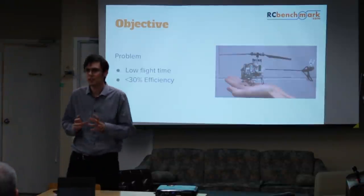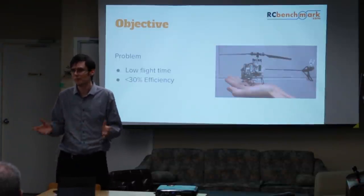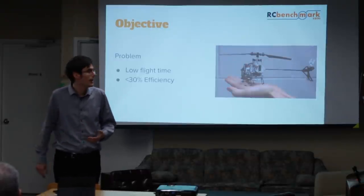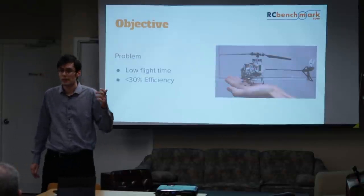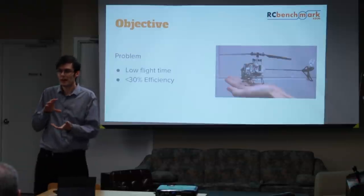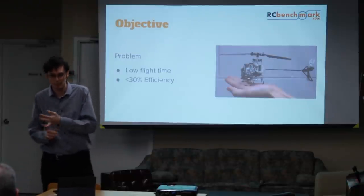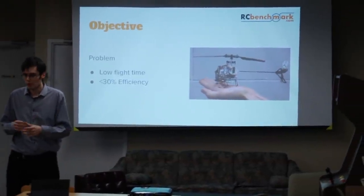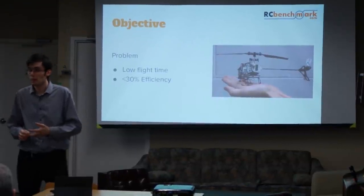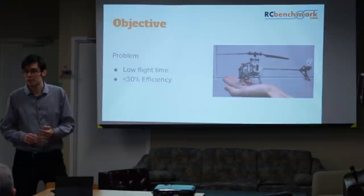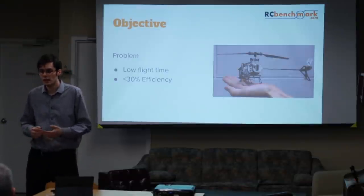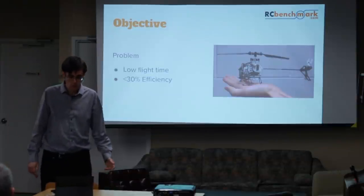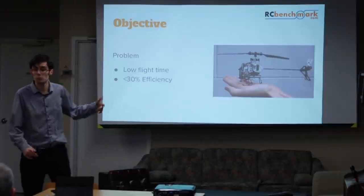But we had a big problem: it couldn't fly long enough. We had about four minutes of flight time. We looked for something to help us understand what was going on, did a lot of research, and ended up building something ourselves. We built a device using MATLAB, a bunch of Arduinos, lots of code, and kitchen scales for sensors. It worked — we measured motor efficiency, propeller efficiency, overall efficiency, torque, and thrust. We managed to more than double the flight time of that little helicopter.